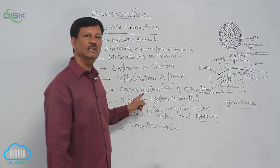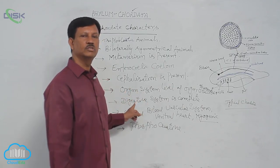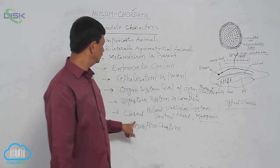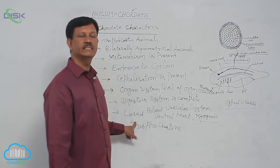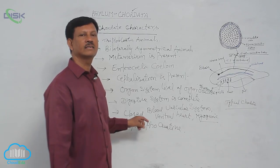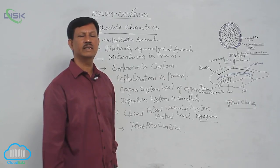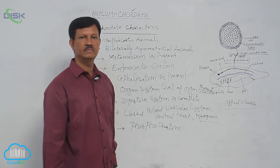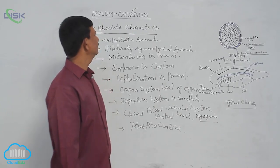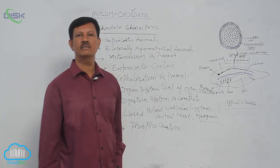Organ system level is present, closed blood vascular system, and phosphocreatine is present. In addition, there are other respiratory organs, nervous system, and reproductive system. Other common characters are present in chordates. These are the general characters of chordata phylum.